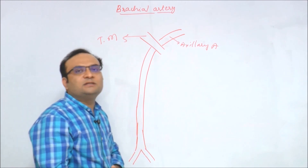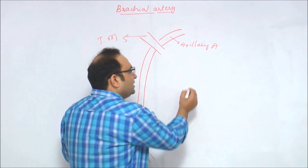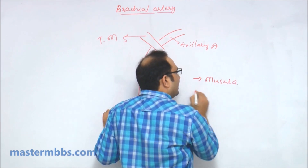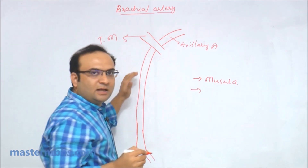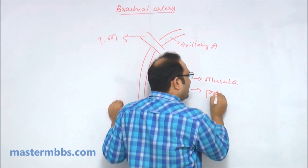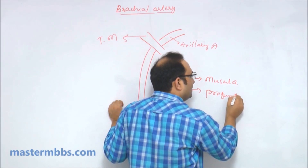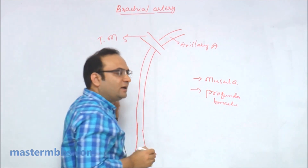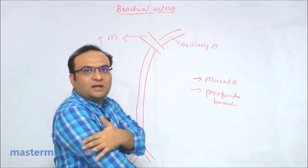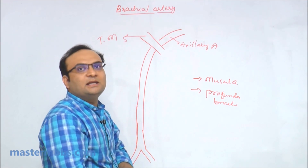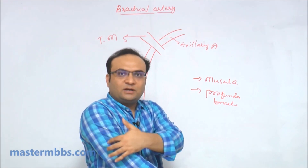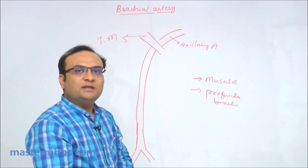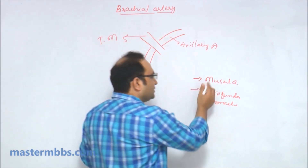Apart from its terminal branches — radial artery and ulnar artery — the brachial artery gives muscular branches and another large branch called the profunda brachii artery, which runs in the posterior compartment along with the radial nerve in the radial groove.